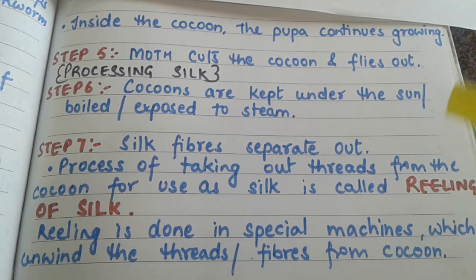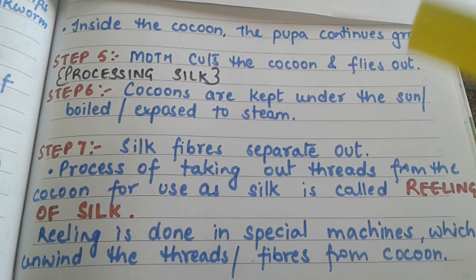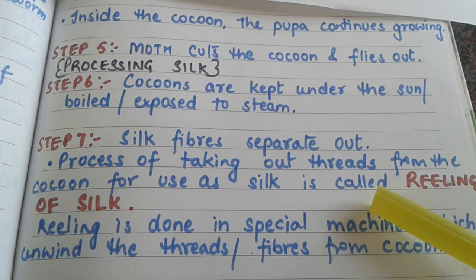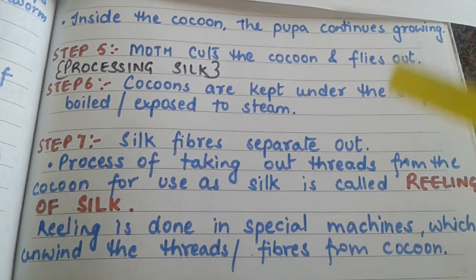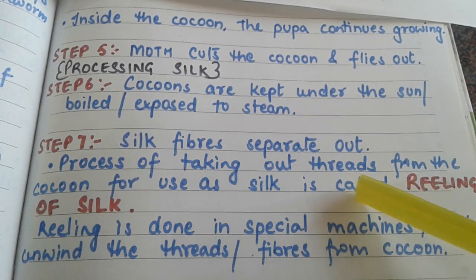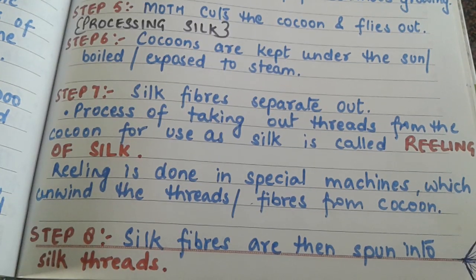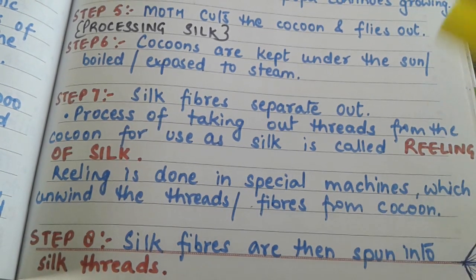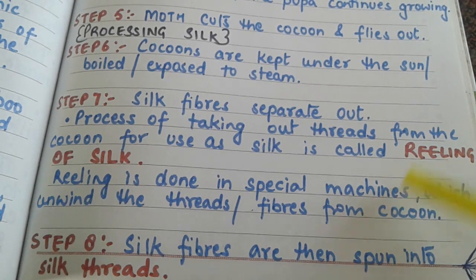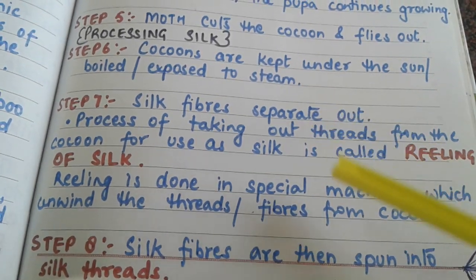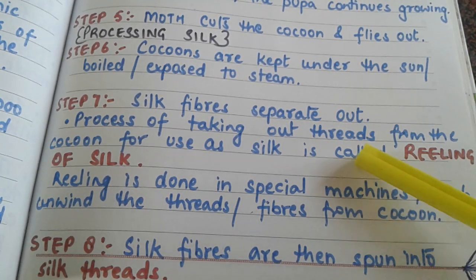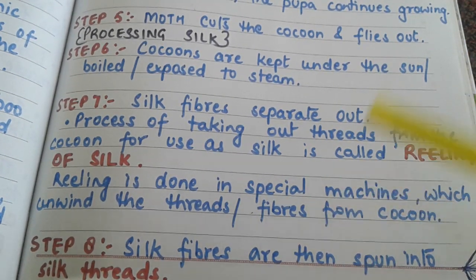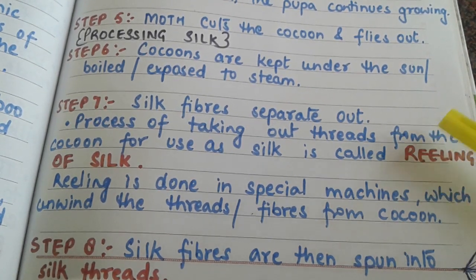Reeling of silk is carried out in special machines that unwind the threads of fibers from the cocoons. After reeling, the silk fibers are spun into silk threads, and the silk threads are woven to get the silk cloth. The resultant fiber obtained by the process of reeling is known as raw silk, and it can be dyed into various colors.